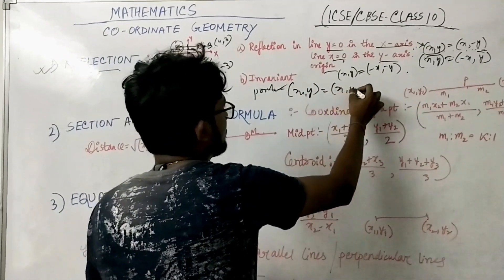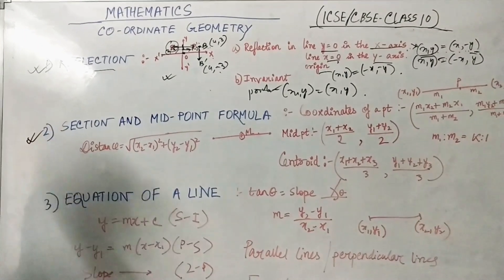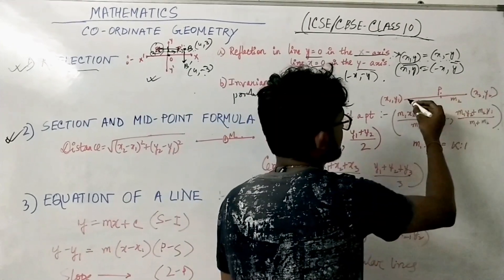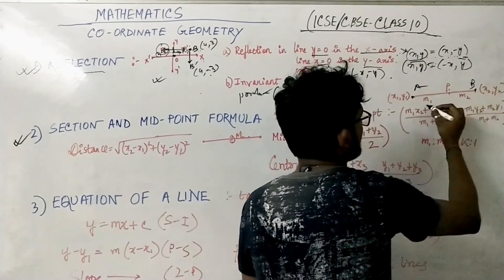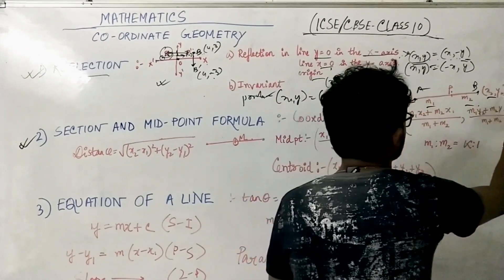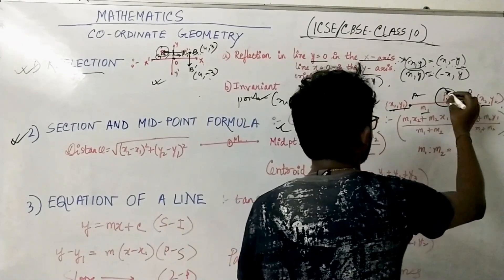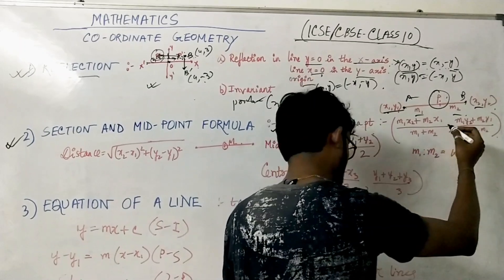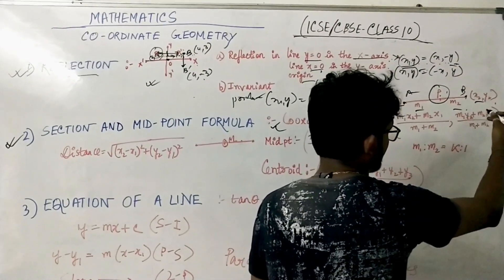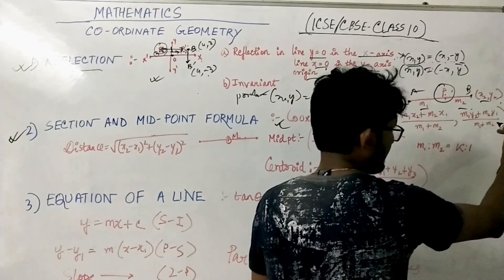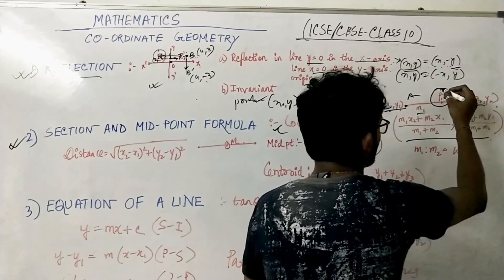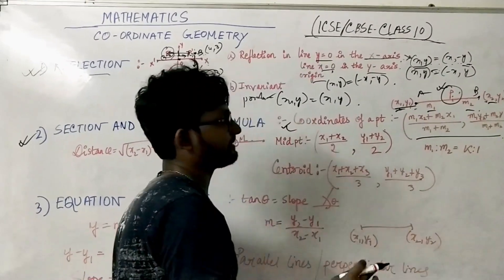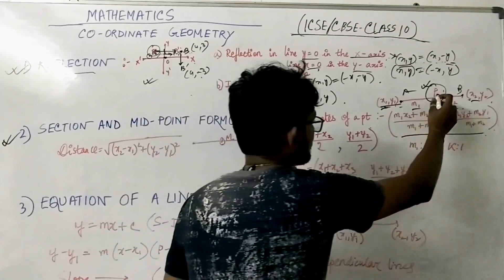Coming to the second section: the section and midpoint formula. Suppose point P divides line segment AB in the ratio m1:m2, with coordinates (x1, y1) and (x2, y2). The formula for the coordinate of point P is: x = (m1·x2 + m2·x1) / (m1 + m2), y = (m1·y2 + m2·y1) / (m1 + m2). This gives the coordinate of the dividing point.